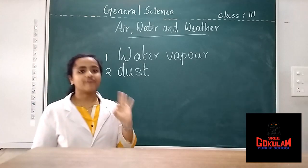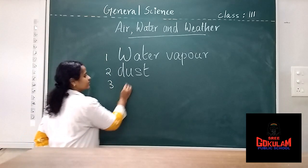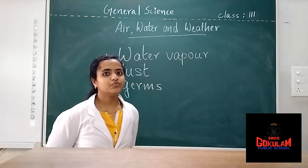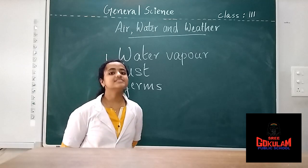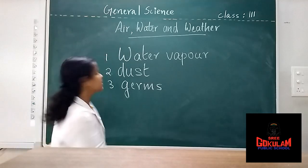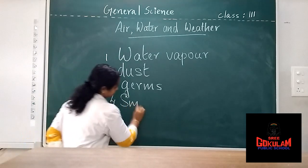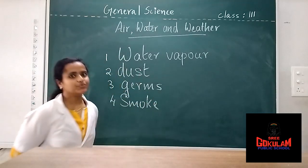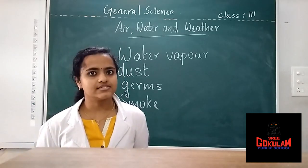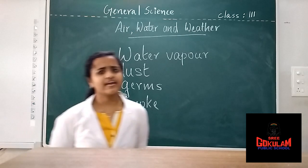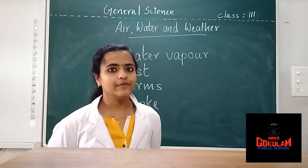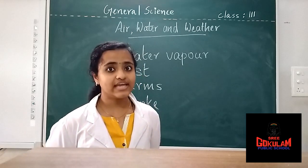The third component of air is germs. You know what germs are, right? Germs make us sick. The next component present in air is smoke. You know what is smoke, right? Smoke is emitted by vehicles running on the road. You have seen it. Smoke pollutes air — it makes air bad and we can't breathe it. While breathing polluted air, we get sick.